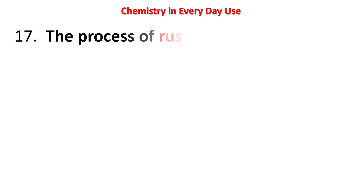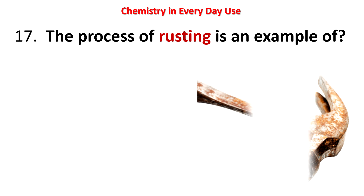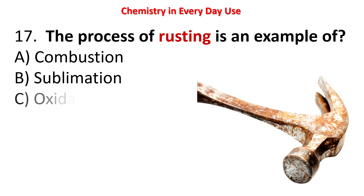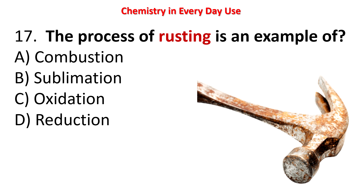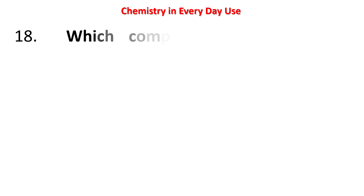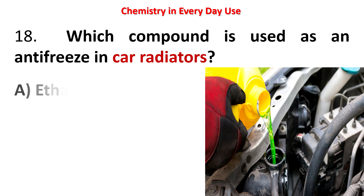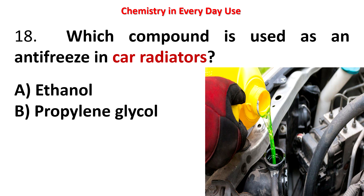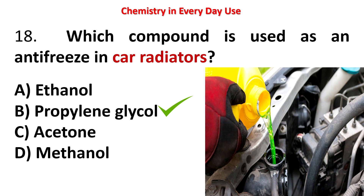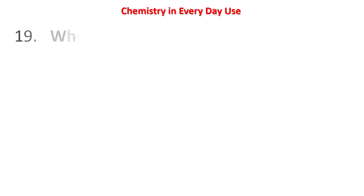Next question: the process of rusting is an example of — combustion, sublimation, oxidation, or reduction? Rusting is an example of oxidation. Next question: which compound is used as an anti-freeze in car radiators? Options: ethanol, propanol, propylene glycol, acetone, methanol. The answer is propylene glycol — it is added to car radiators as an anti-freeze.